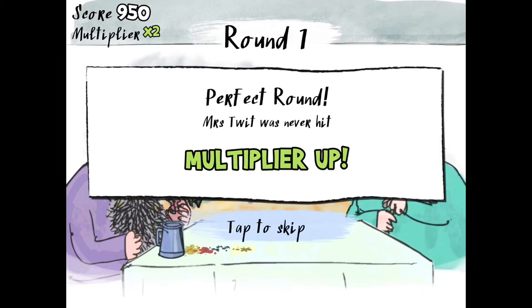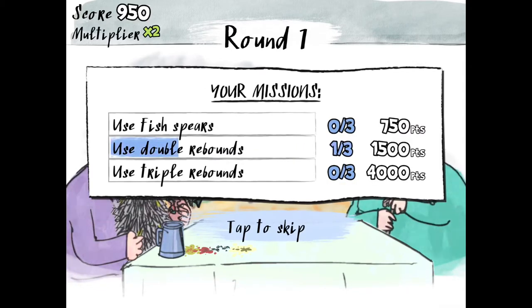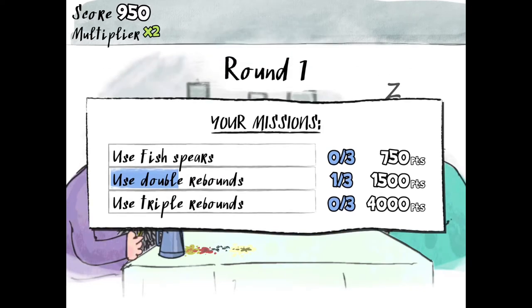Round one is over, perfect round. So I guess you go to use double rebounds, use fish spares and use triple rebounds.